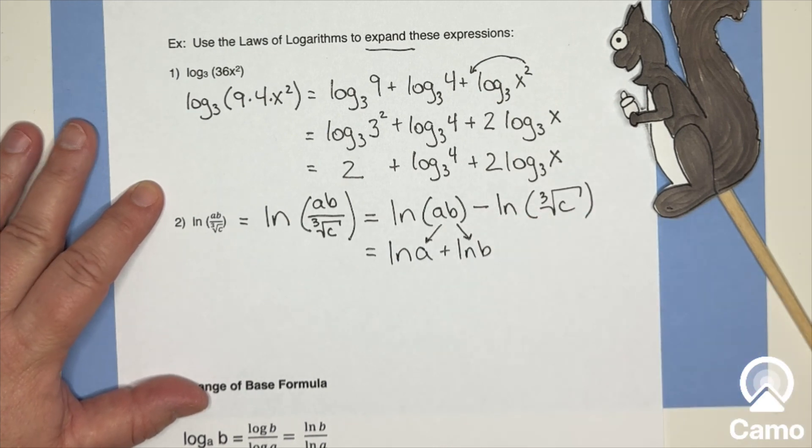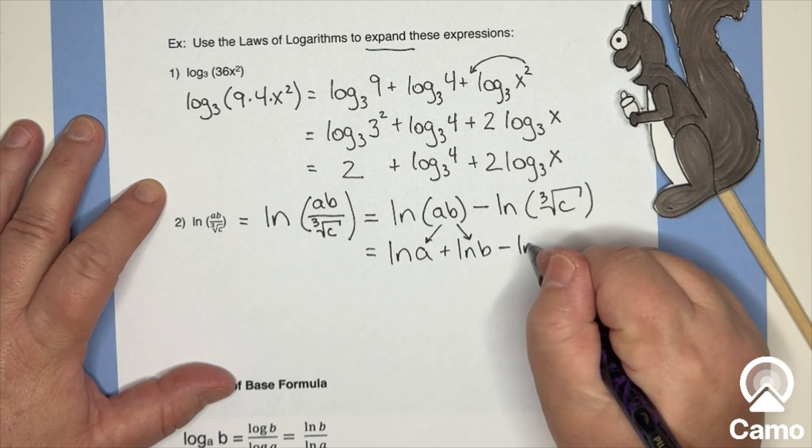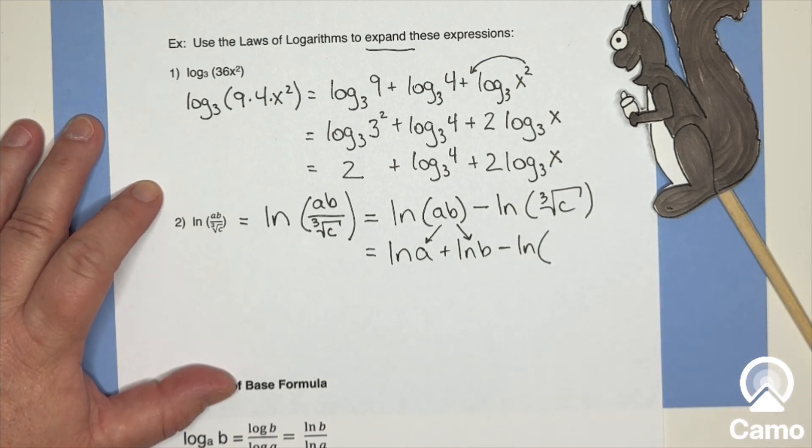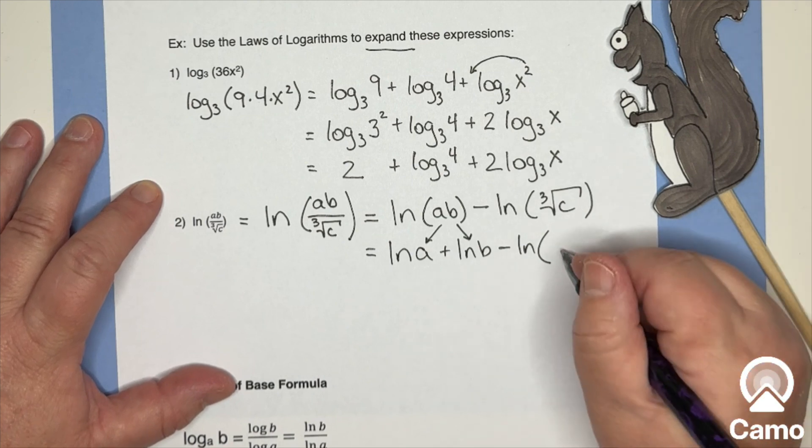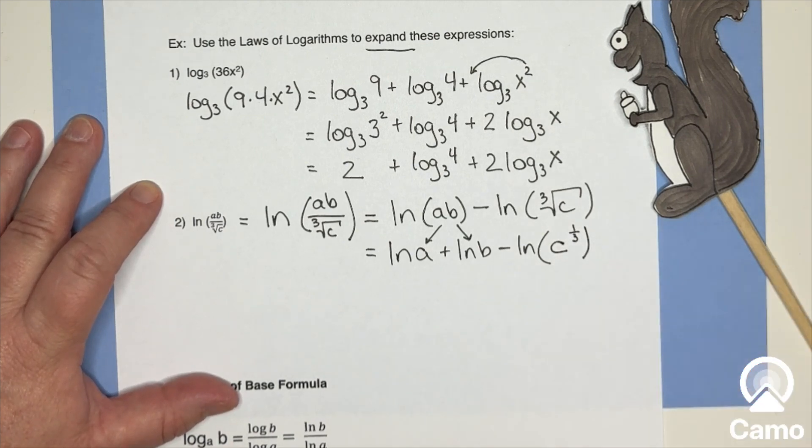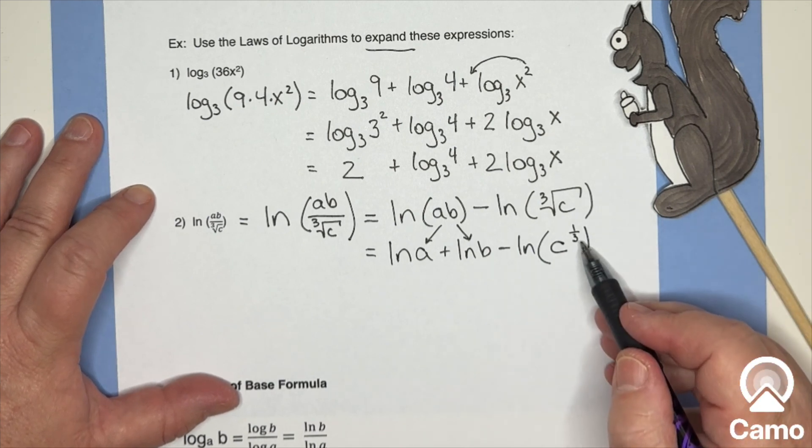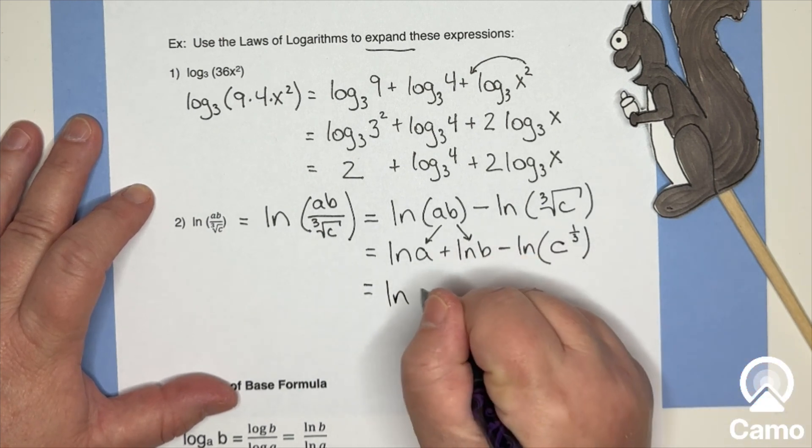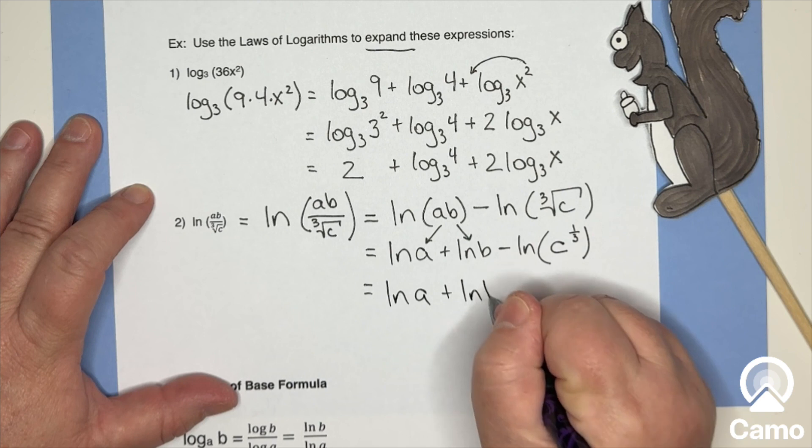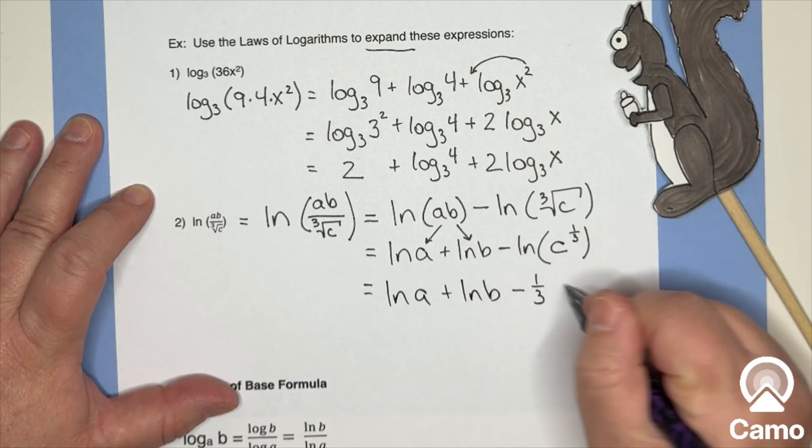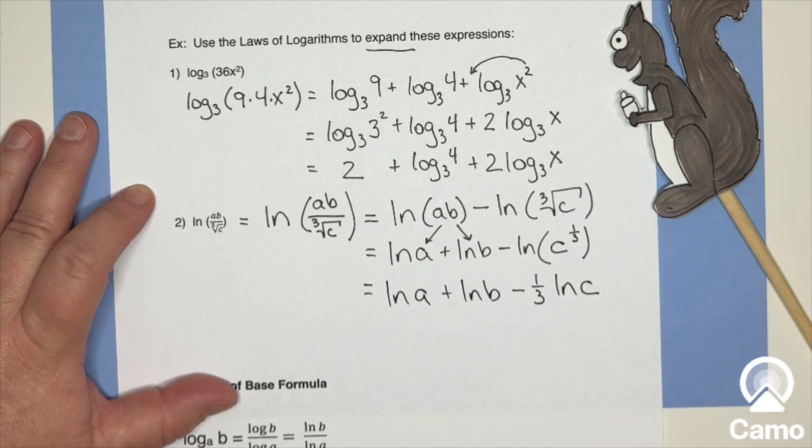The a and the b get separated. Now here, this is annoying me because cube roots are sometimes annoying. I know I can write this as one third exponent, but as soon as I write it as an exponent, I can do something. I can take the one third out in front. So that means I've got the natural log of a plus the natural log of b minus one third, the natural log of c.